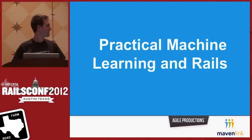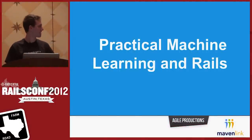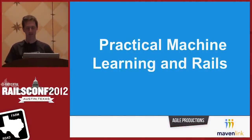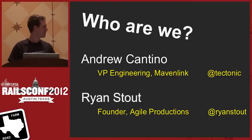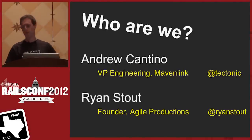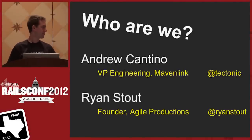I'm here to talk about practical machine learning in Rails. I'm Andrew Cantino, I'm the VP of engineering at Mavenlink, and this is Ryan Stout, he's the founder of Agile Productions.